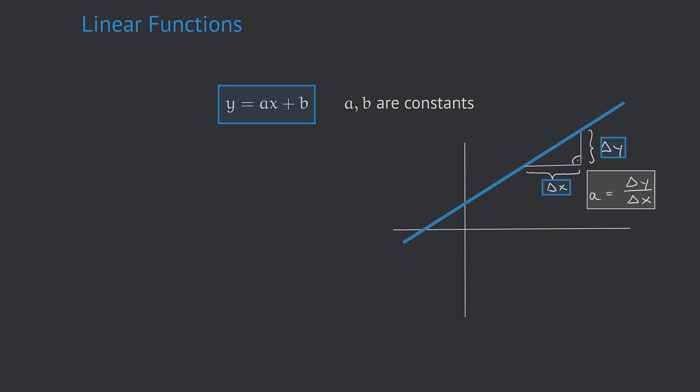So the constant a determines the steepness or the slope of the line, which is why a is also called the slope of the linear function.